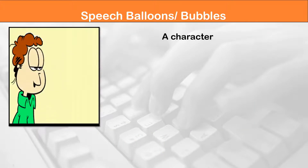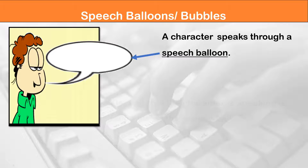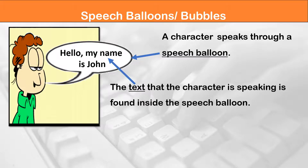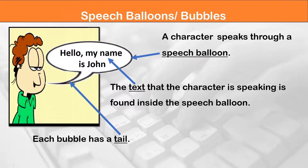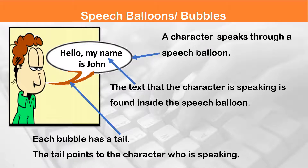A character speaks through a speech balloon, also called a speech bubble. The text that the character is speaking is found inside the speech bubble. Each bubble has a tail, and the tail points to the character who is speaking.